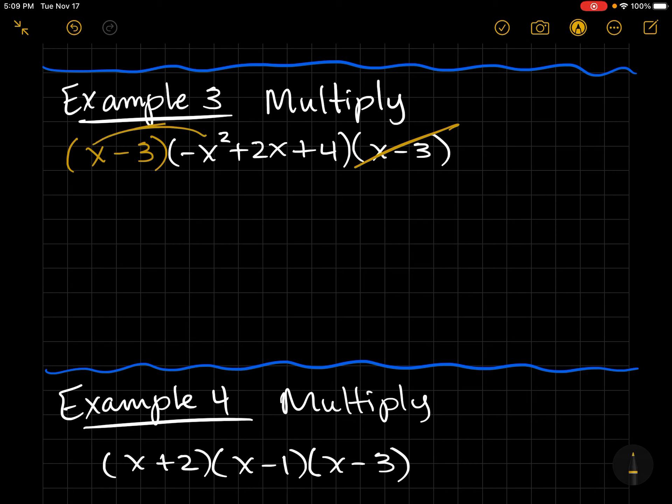Because first I'm going to distribute the x to all terms and then I'm going to distribute the negative 3 to all terms. So I just feel like I'm doing less distributing if I distribute twice versus doing three times to these two.